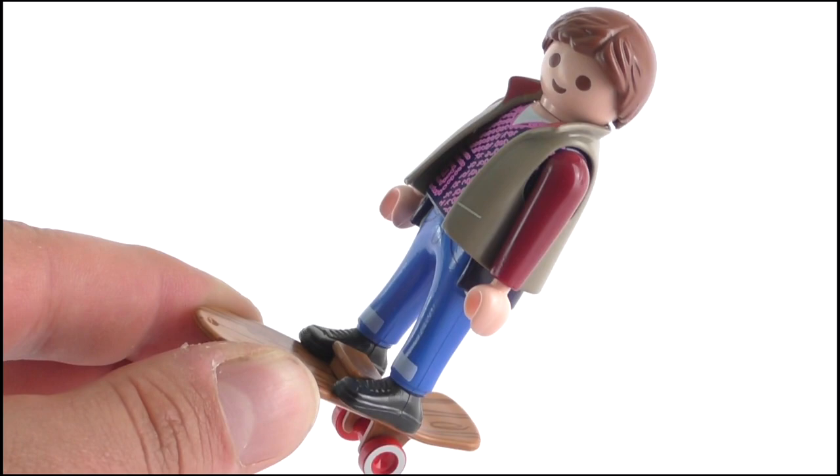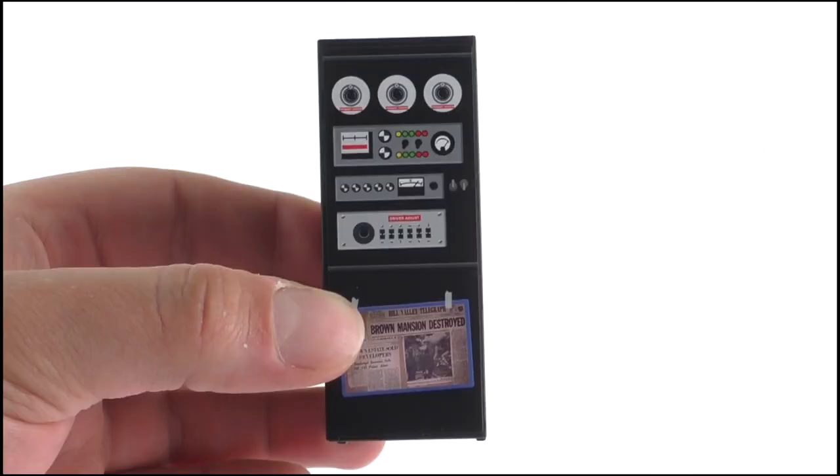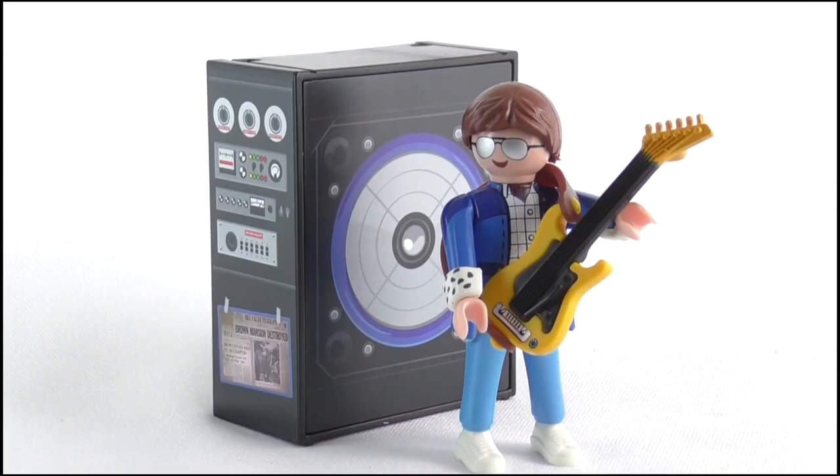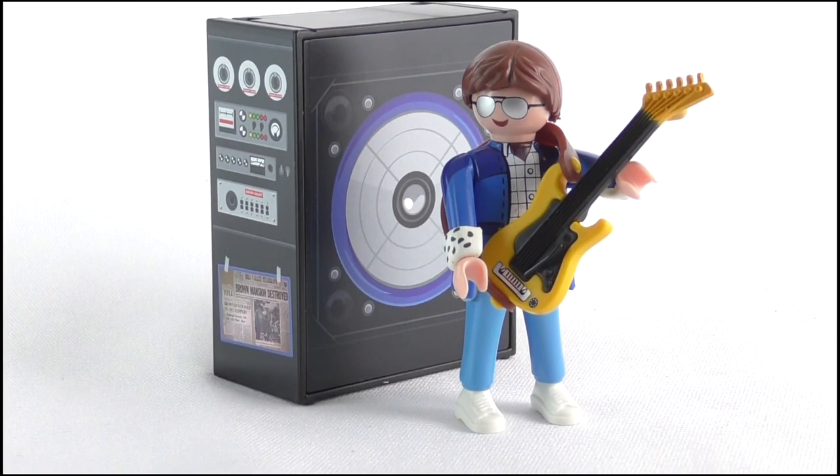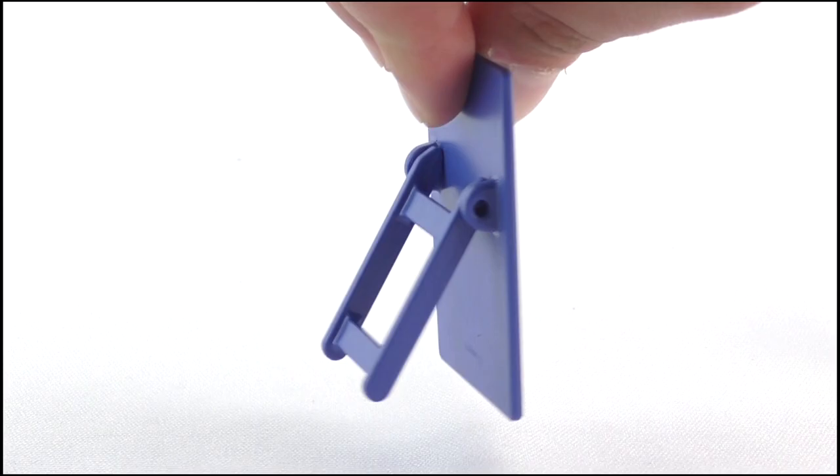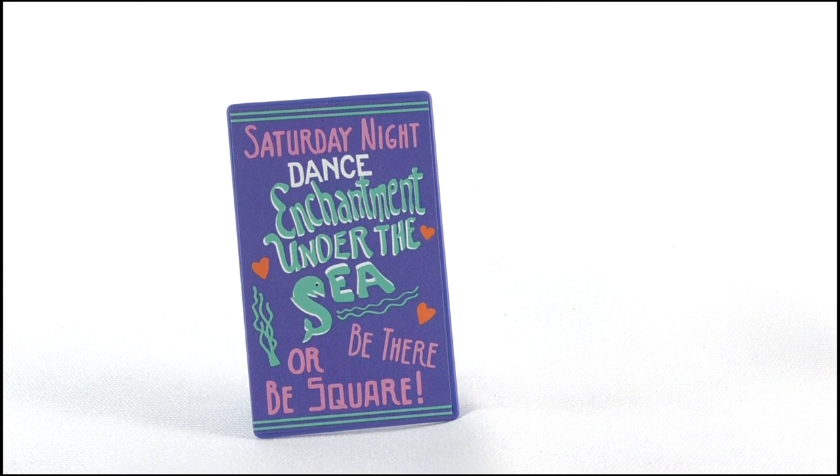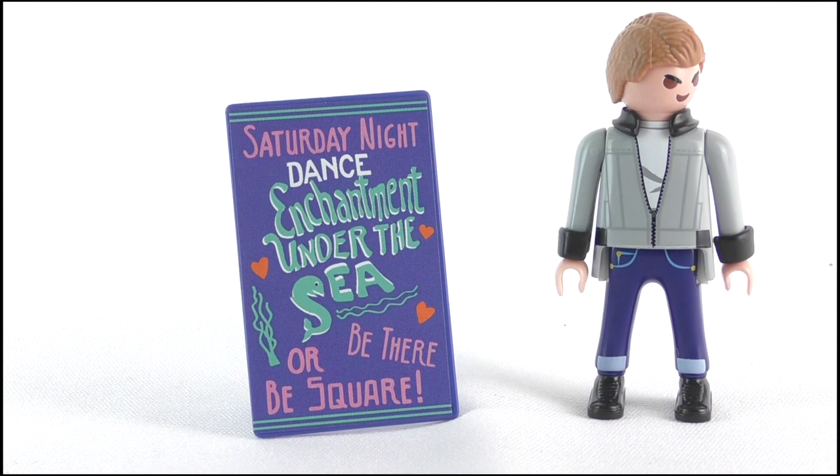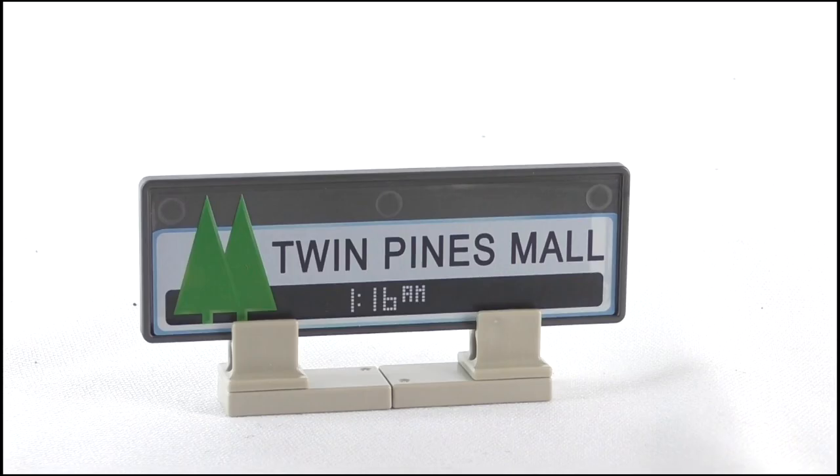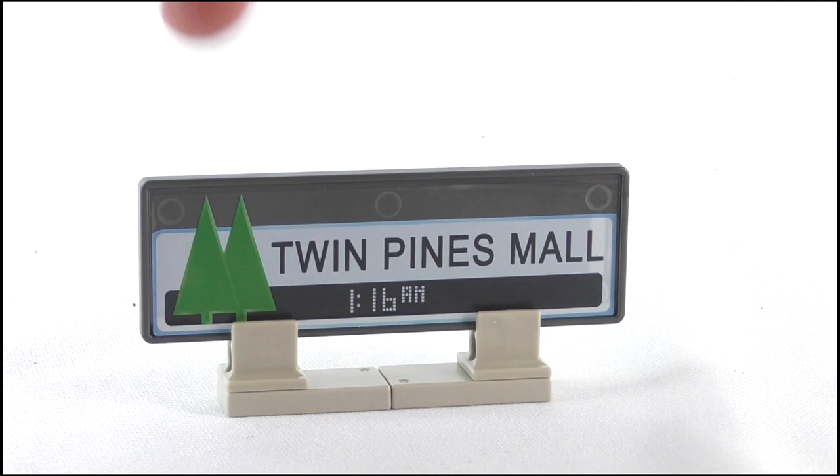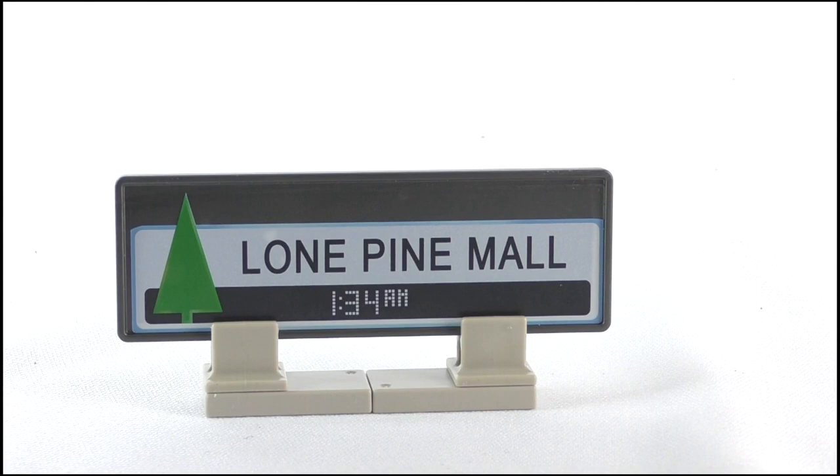As for some of the larger accessories, we get the gigantic amplifier from the start of the movie, which is just a standard Playmobil piece, with stickers added on the front and side, but it makes for a cool background display piece for the Marty figure. There is also an Enchantment Under the Sea Dance poster, which is freestanding, but there are no George or Lorraine figures to display it with. Oh well, looks like Biff is going to have to go stag. Last up, we have the Twin Pines mall sign, which of course is reversible, giving us the Lone Pine mall sign on the opposing side. I also love the accurate times displayed under each sign.